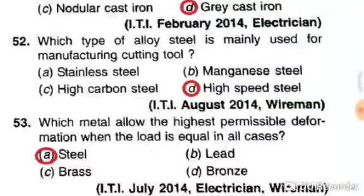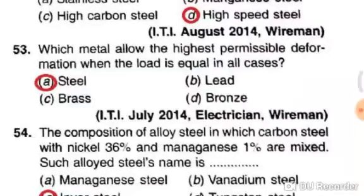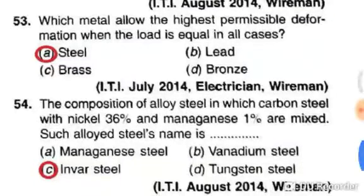Which metal allows the highest permissible deformation when the load is equal in all directions? Steel. The composition of alloy steel in which carbon steel is mixed with nickel 36% and manganese 1% — such alloy steel is named as Invar steel.